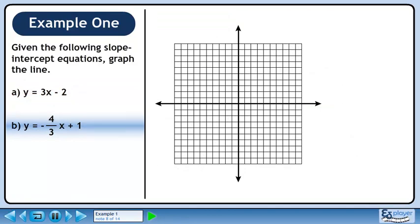In part B, we'll graph the slope-intercept equation y equals minus 4 over 3x plus 1.